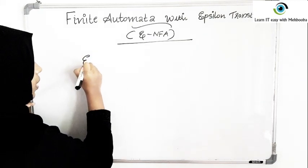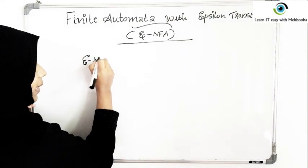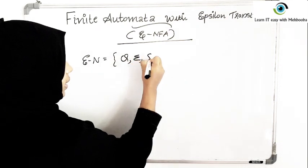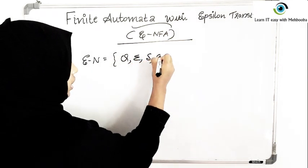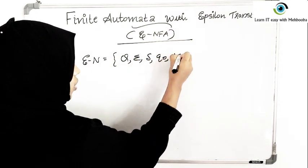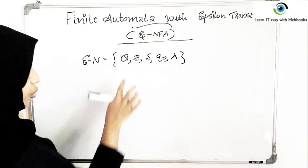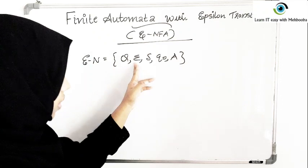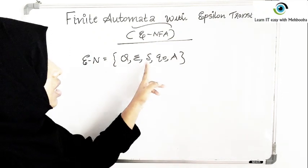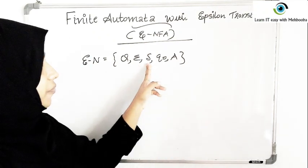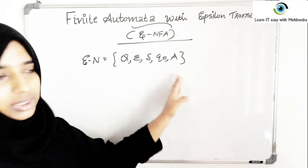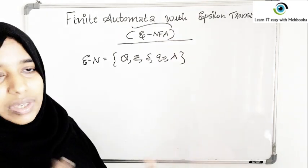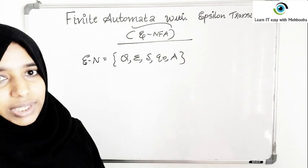The tuple for an epsilon NFA will be the same as for NFA. It contains Q, sigma, delta, Q0, and A — the set of accepting states. Here Q is the set of states, sigma is the set of input symbols, delta is the transition function, Q0 is the start state, and A is the set of accepting states. This is exactly the same as NFA and DFA.